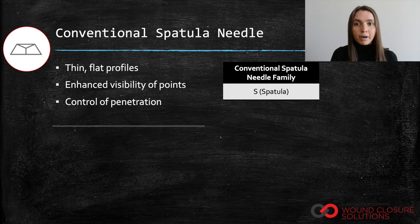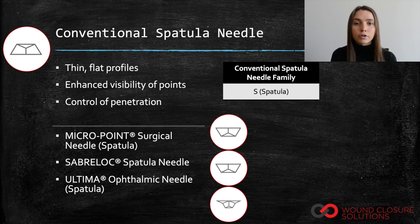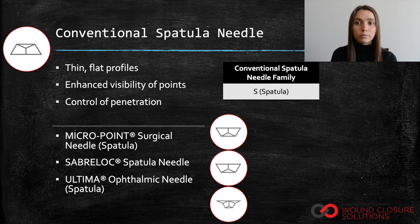Subtypes include micropoint, sabrelock, and ultima spatula needles. Micropoint spatula needles have the same thin, flat profiles like conventional spatula needles, but they are reverse. These needles are designed specifically for ophthalmic anterior segment surgery. Sabrelock spatula needles have side cutting spatula shaped edges which provide great control, and are typically intended for layers of scleral or corneal tissues.